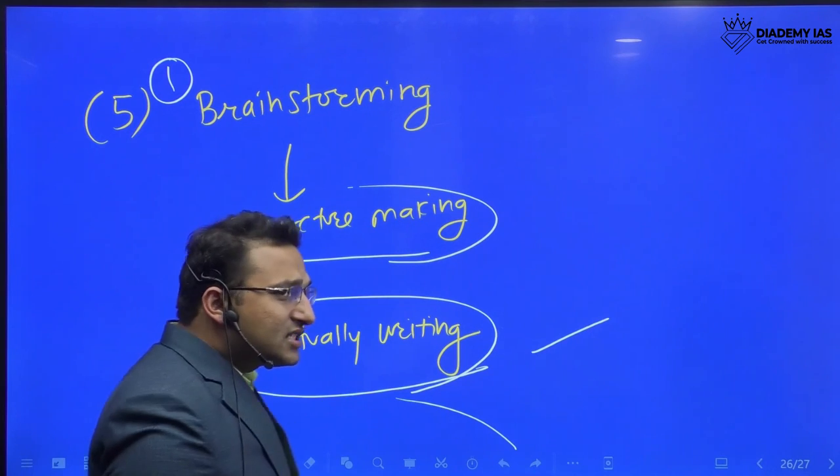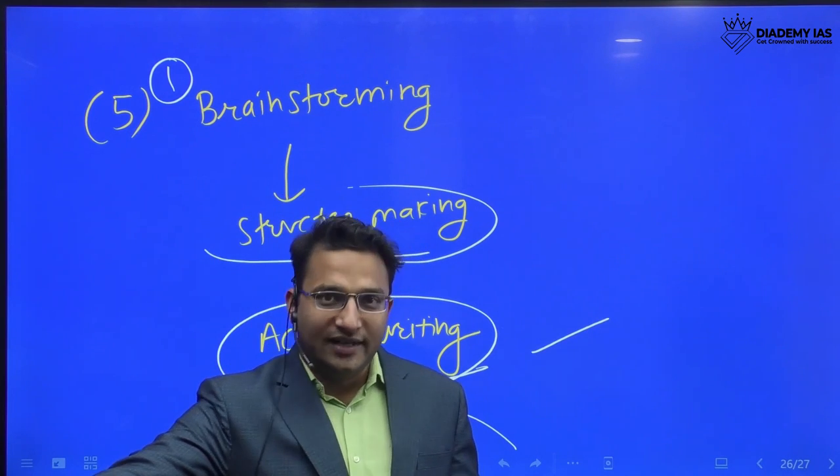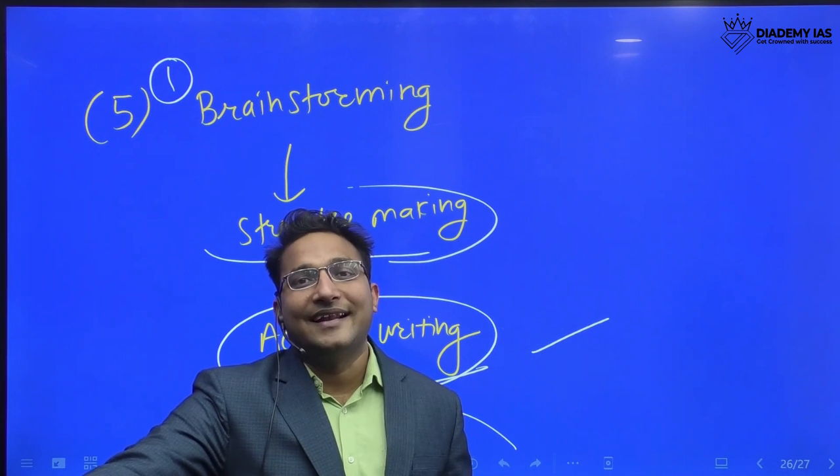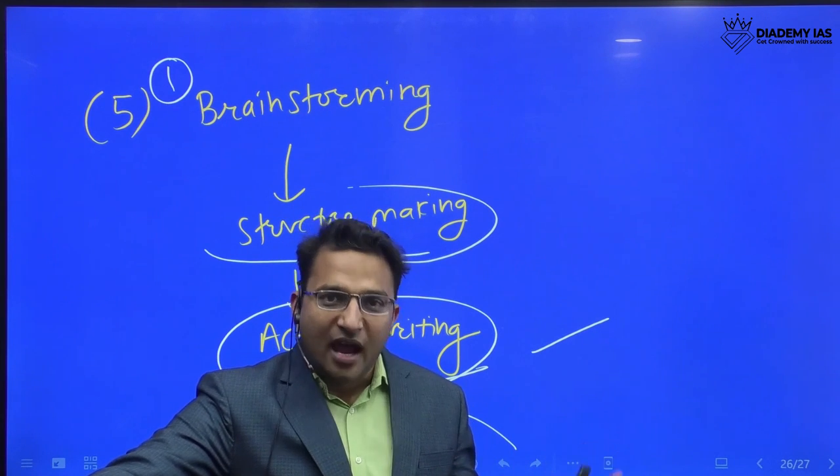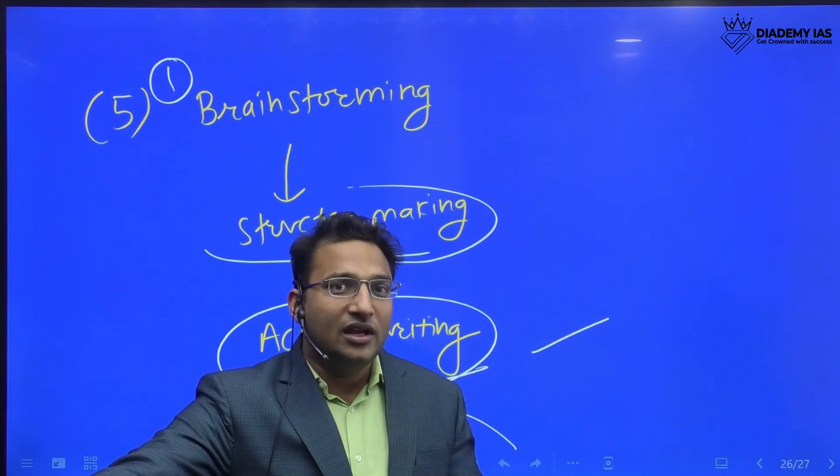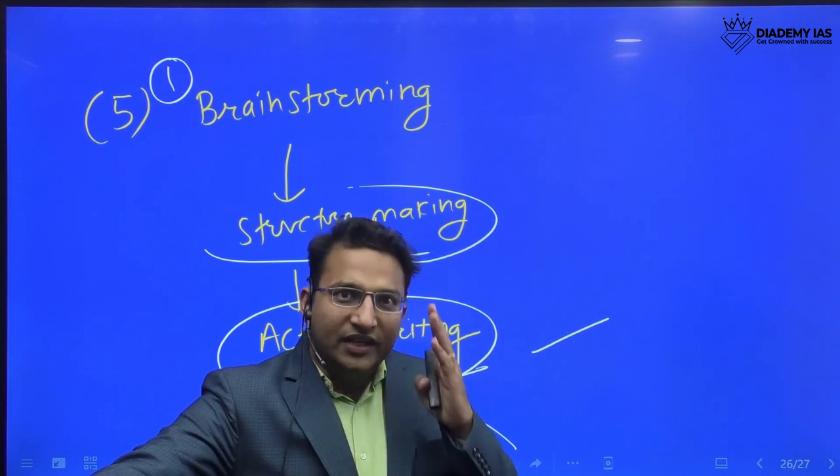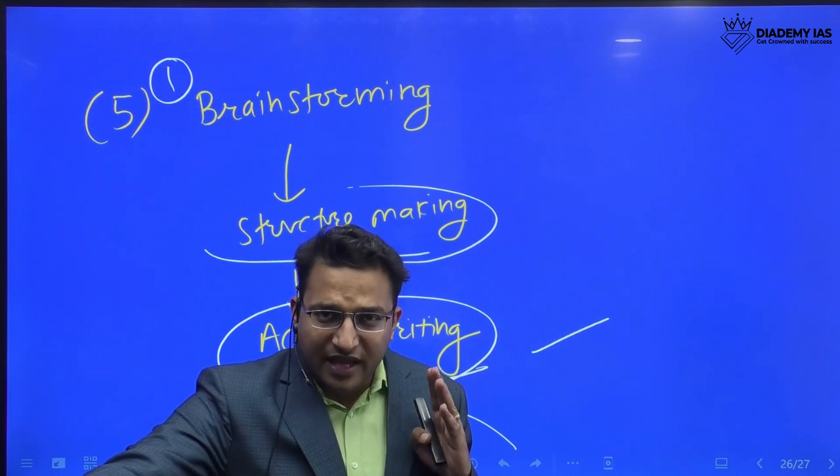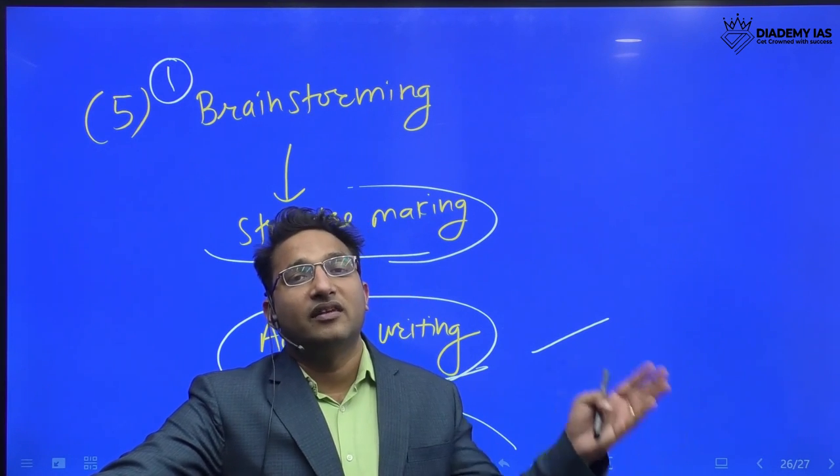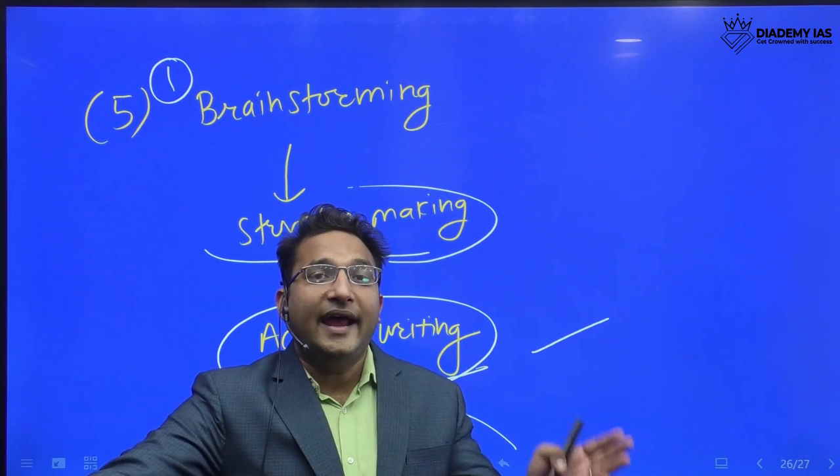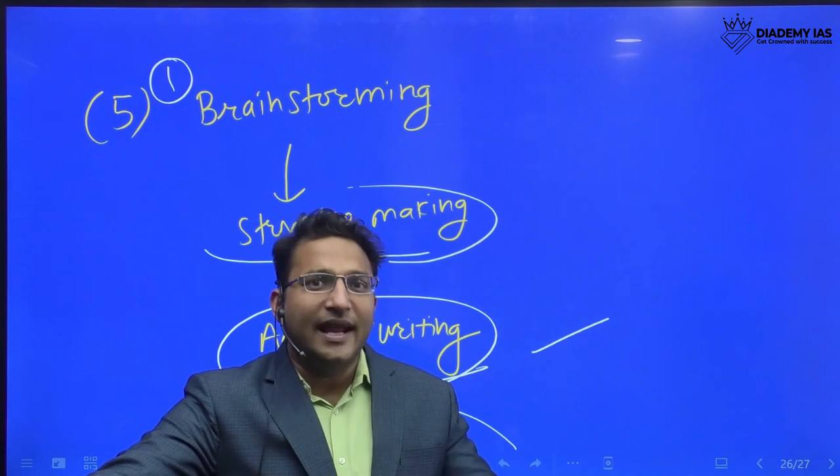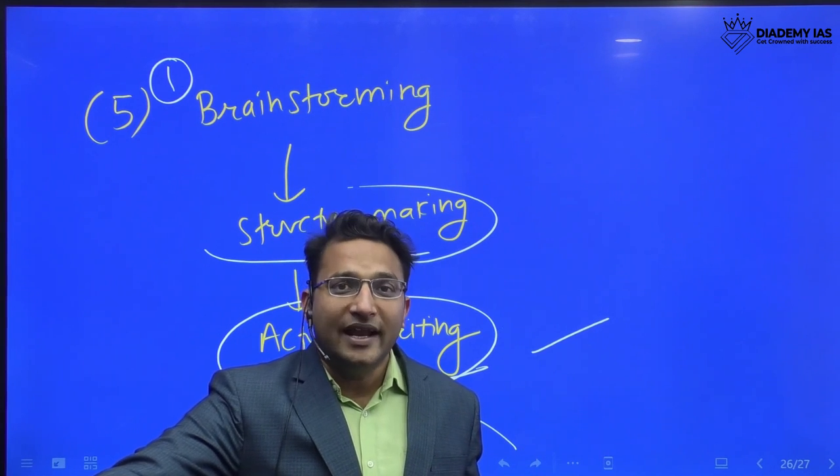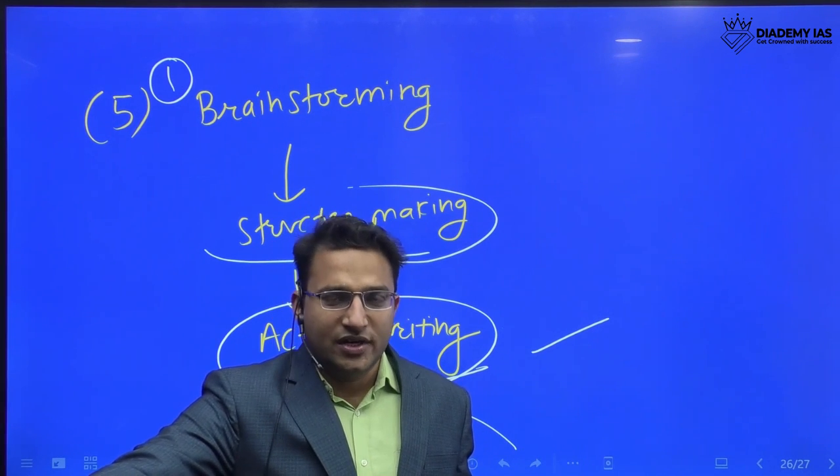This process should be followed in the initial time. Later on, after some time, you can start directly writing the answer once your habit is developed. So initially when you're writing the answer, please develop the habit. Developing the right habit is more important. Develop the habit of brainstorming, develop the habit of making the structure, and then only start writing the answer. After some time, maybe after two to three months, you will automatically start writing good answers. Then no need to separately make the structure.